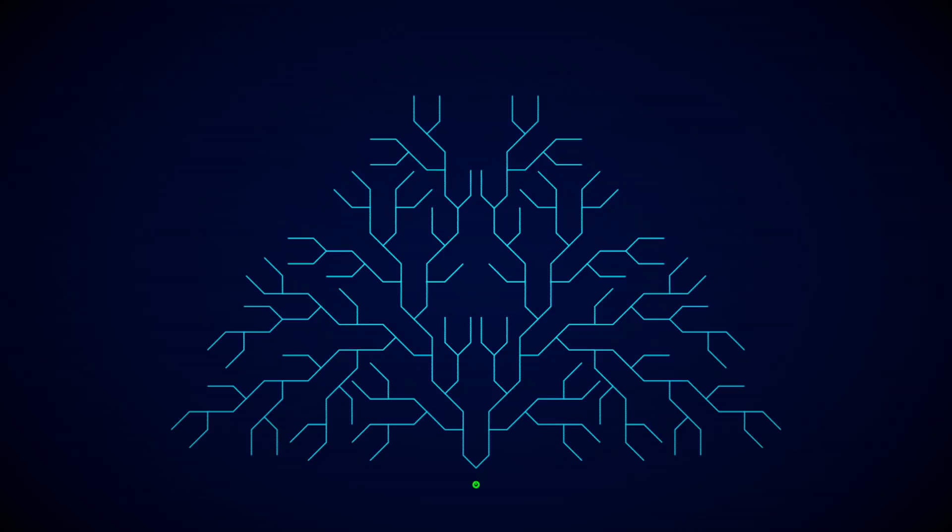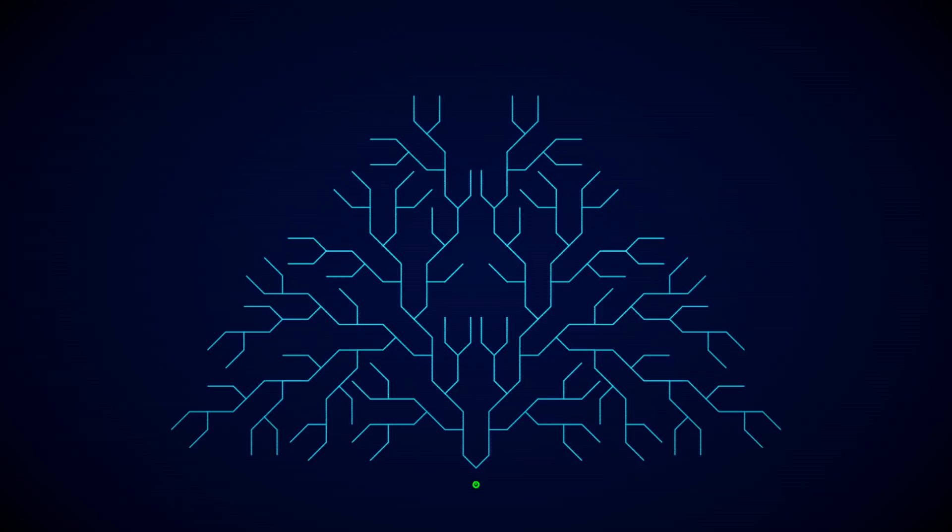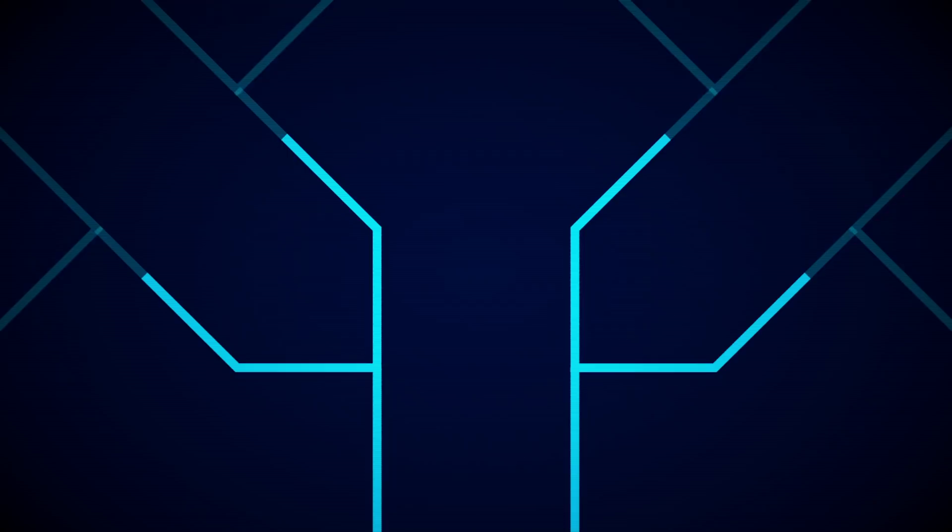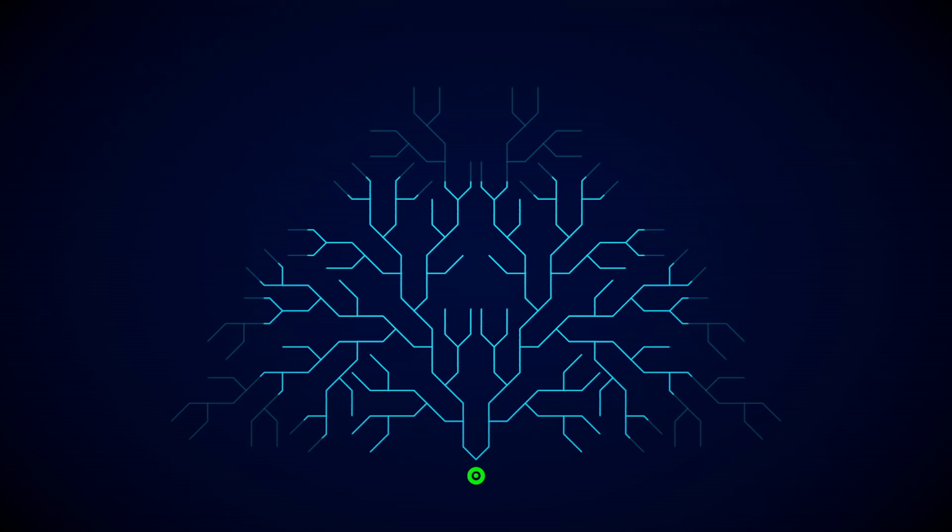Starting from the current position, each section runs for a distance, then splits in two. Every branch does the same thing, again and again. There are thousands of branches. Only one path leads to the artifact, all the others to destruction.